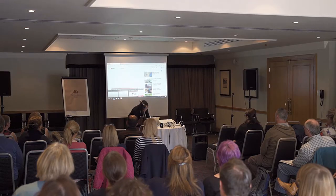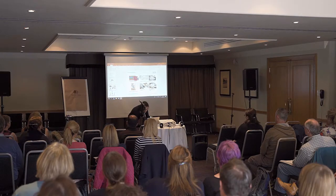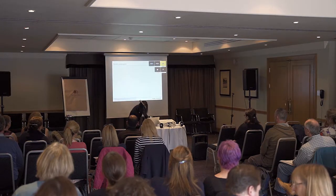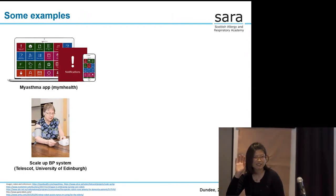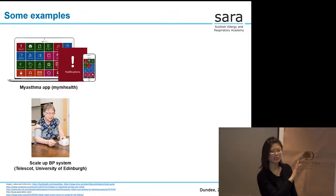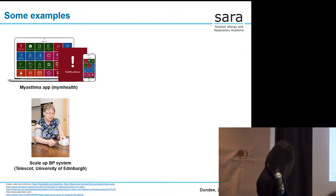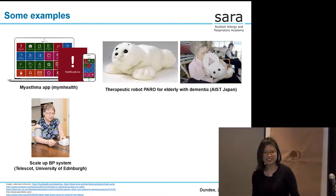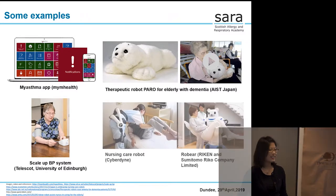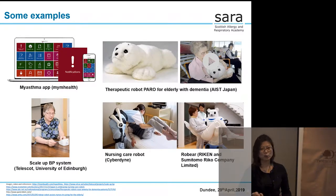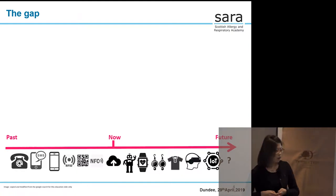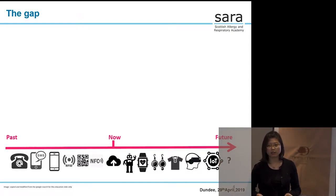That example is from an Australian research institution using a robot to help the elderly. We can think about what kinds of things we can do with robots in healthcare in the future — but the key question is how to use them in the right way. For telehealth development, we need to include many people: clinicians, engineers, researchers, and others.